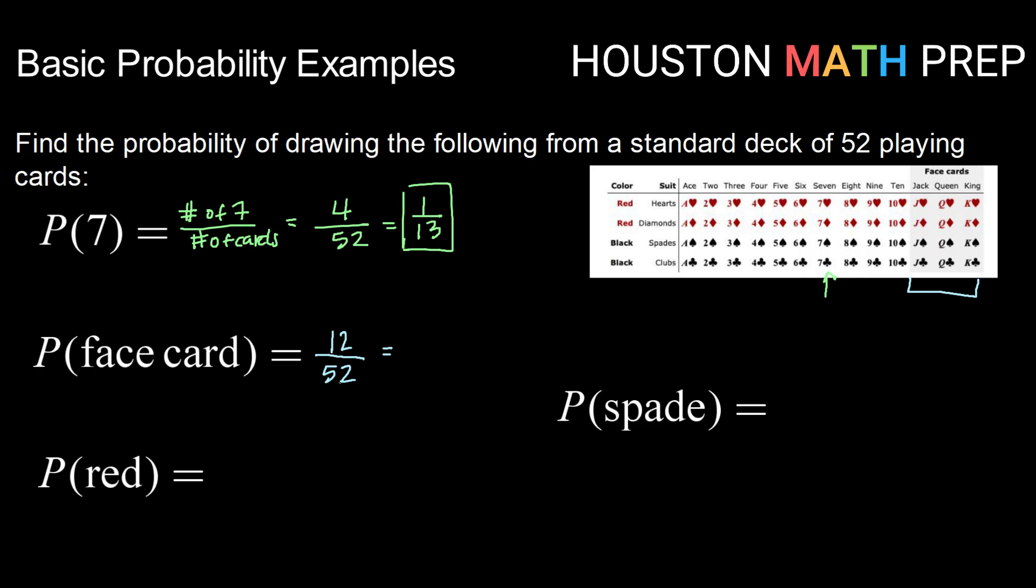Reducing 12 over 52, we could reduce by 2. That would make 6 out of 26. Looks like we could reduce by 2 again to get 3 out of 13. So the probability of drawing a face card is 12 out of 52, or 3 out of 13.